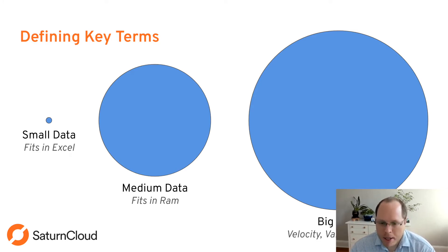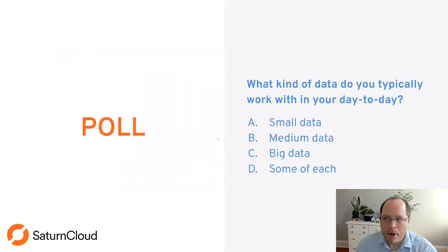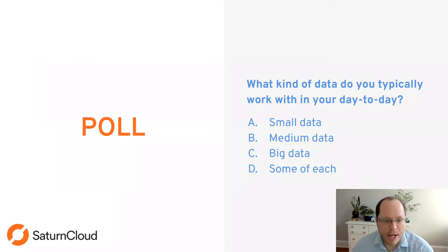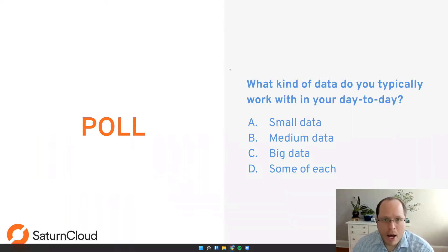Big data could also be a large variety of data — things like images, text, or sound. Or it could be coming in really quickly. For instance, if you're getting sensor data and you need to process it right away, you might need different approaches than you would for relatively static data.